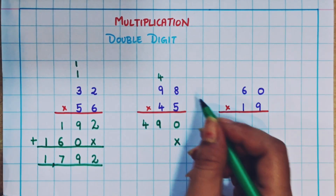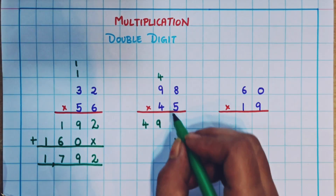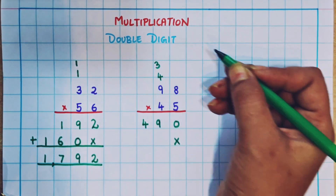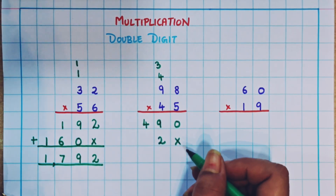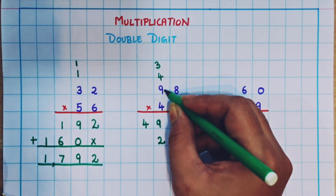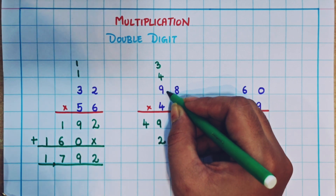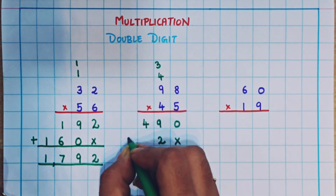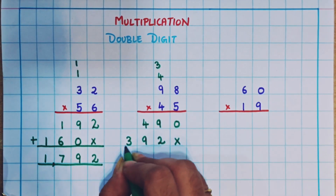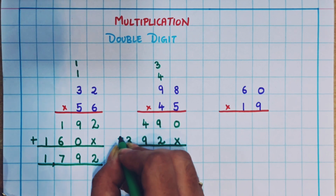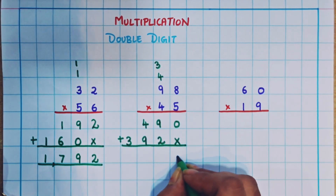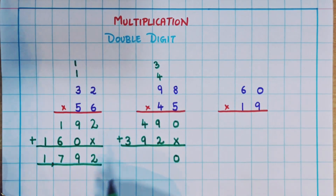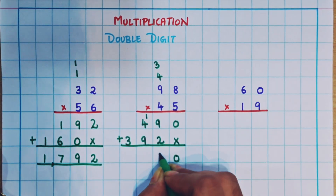Now I'll do the multiplication using the number in the tens place. 4 eights are 32, so 3 I will write as a carryover and 2 I will write here. Now 4 nines are 36, plus carryover 3 is 39. So here I'll write 39. Now I'll add both numbers. 0 plus nothing is 0, 9 plus 2 is 11, so 1 as a carryover and 1 here.